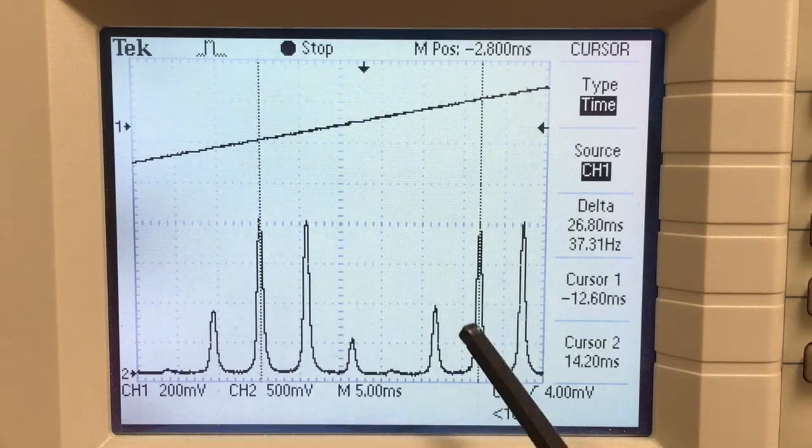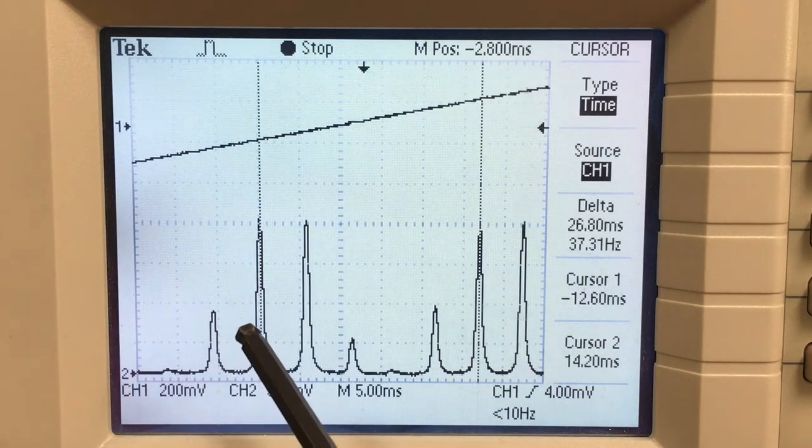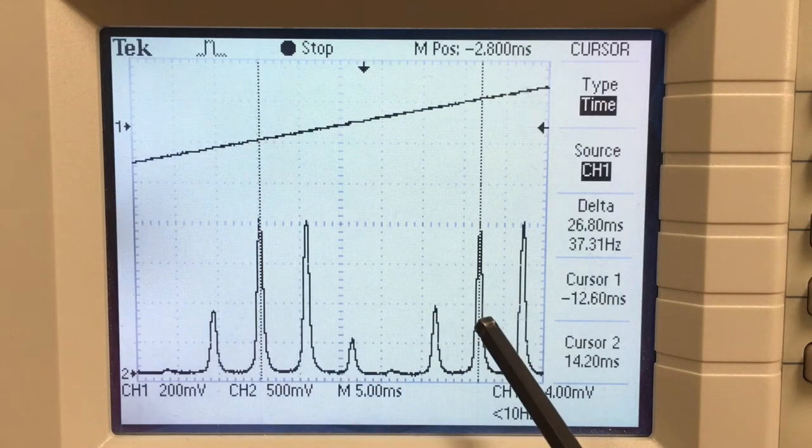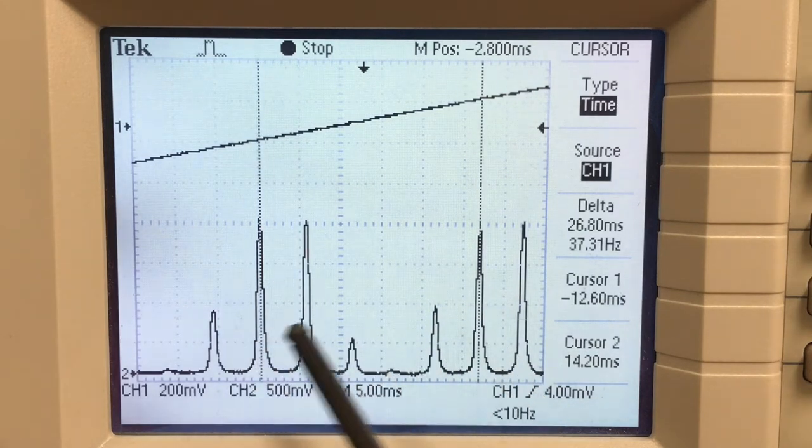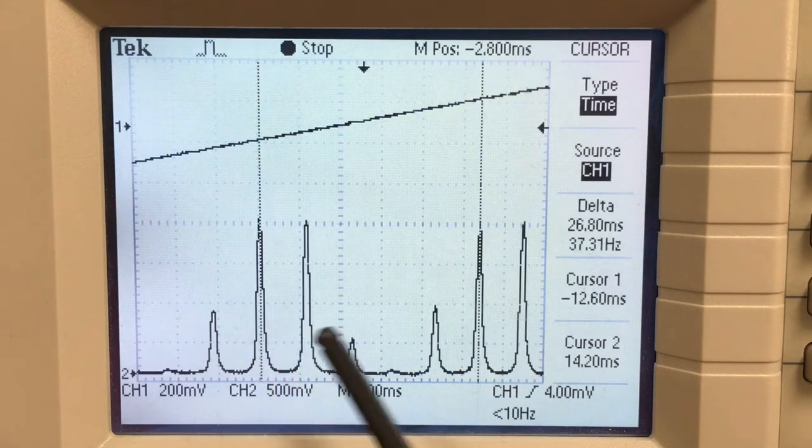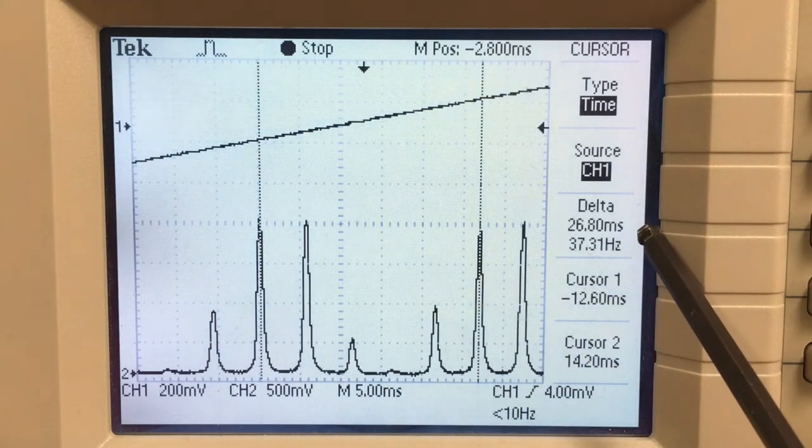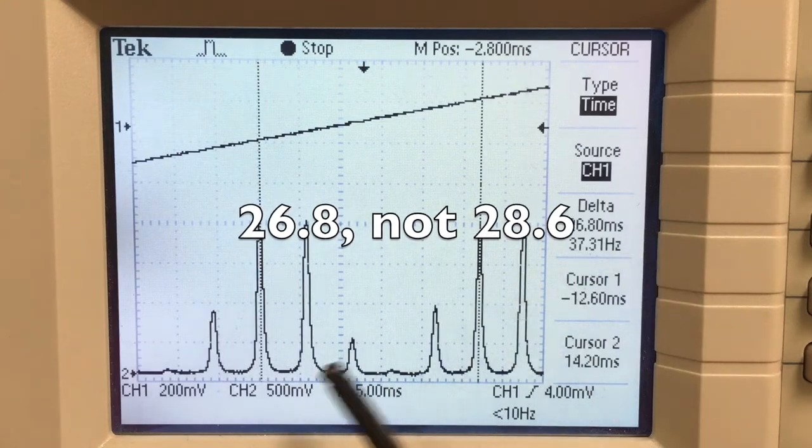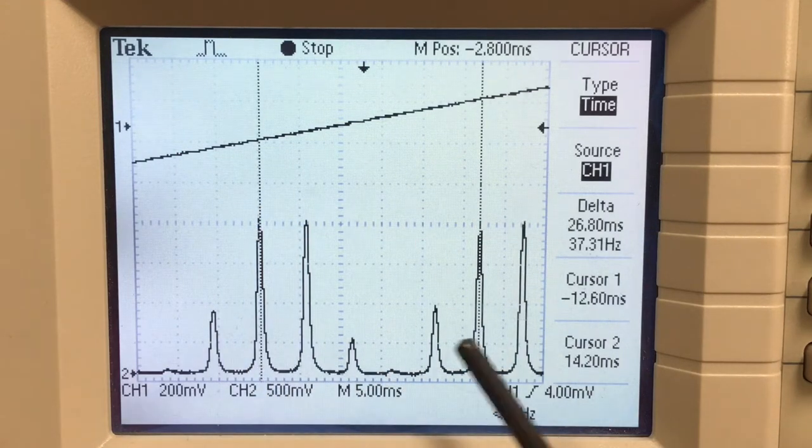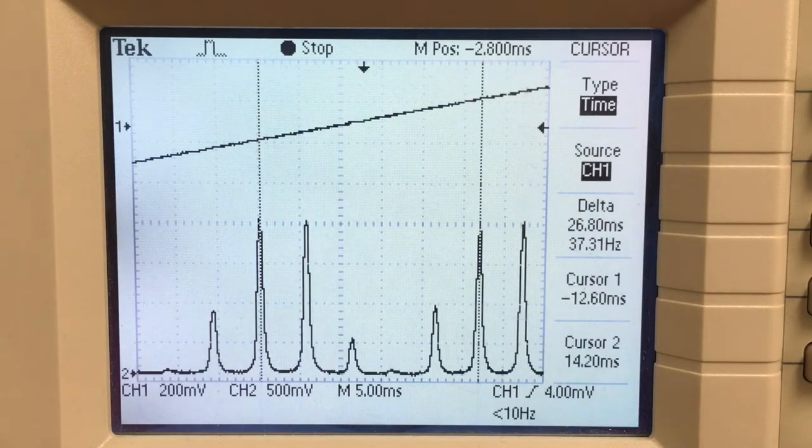So in 26.8 milliseconds, the mirror scans along and travels the equivalent of one, and our frequency scan changes by one free spectral range, which you can calculate. So that 28.6 milliseconds corresponds to one free spectral range. There's our calibration.